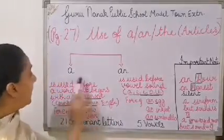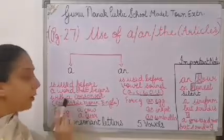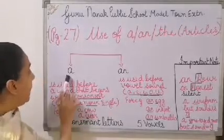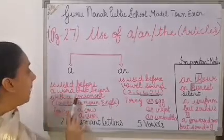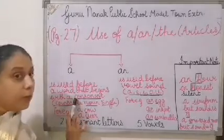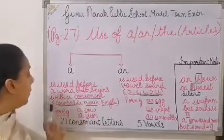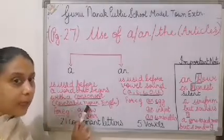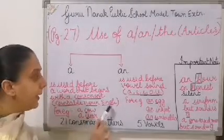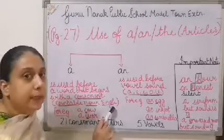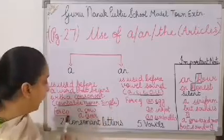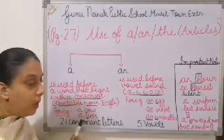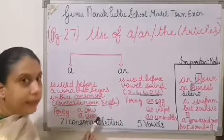So these three points you need to remember for A: we use A when it is used before a consonant letter, moreover it has a countable noun, and it should be singular. For example: a cow, a deer.